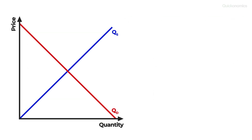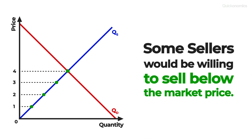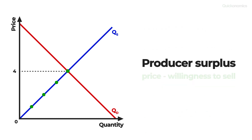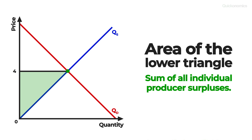Now on to step 3: connecting the price axis and the market equilibrium. Looking at our supply and demand graph, we can see that the market price is usually not the lowest possible price at which a good or service could be sold. That means there are at least some sellers who would be willing to sell their product at a price below the actual market price. These sellers earn producer surplus equal to the market price minus their individual willingness to sell. We illustrate this by drawing a horizontal line between the market price on the y-axis — $4 in our case — and the market equilibrium, dividing the area into two triangles. The area of the lower triangle represents total producer surplus.